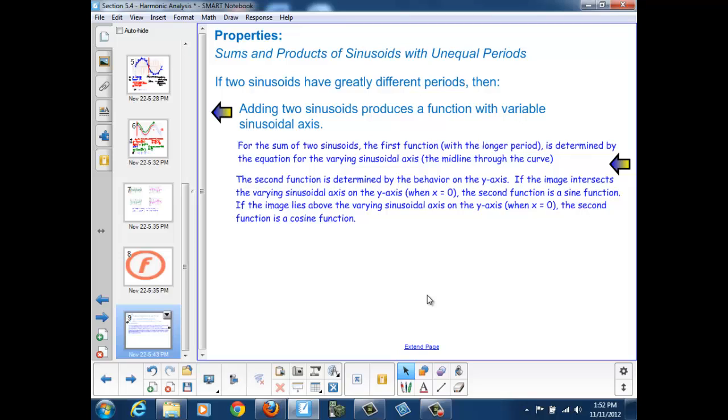For the sum of the two sinusoids, the first function with the longer period is determined by the equation for the varying sinusoidal axis, the midline through the curve. The second function is determined by the behavior on the y-axis. If the image intersects the varying sinusoidal axis on the y-axis when x equals 0, that second function is a sine function. If the image lies above the varying sinusoidal axis on the y-axis when x equals 0, the second function is a cosine function, because we're adding additional values to the original midline.